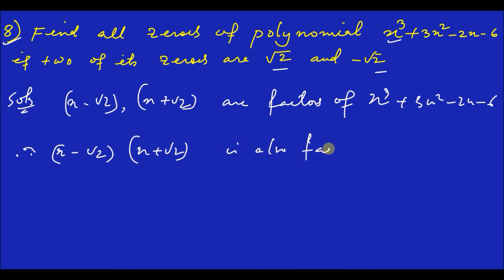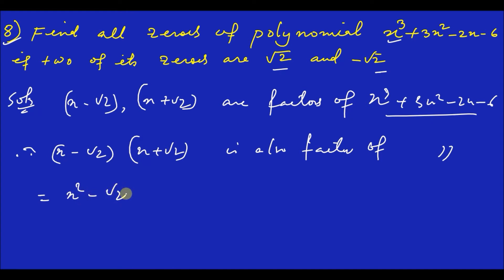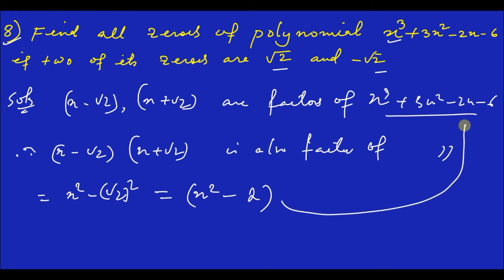This factor of the polynomial: using the identity a minus b into a plus b equals a squared minus b squared, we get x minus root 2 into x plus root 2 equals x squared minus the whole square of root 2, which gives x squared minus 2. So x squared minus 2 is a factor.